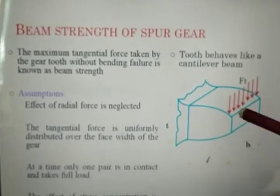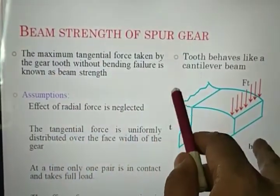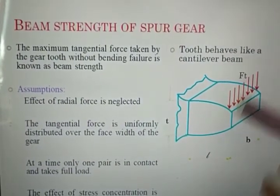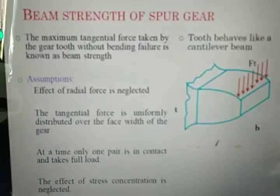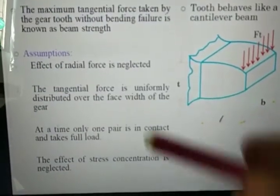And here we are going to design the beam strength equation, the maximum tangential force taken by the gear tooth without bending failure. So for that, Lewis considers some assumptions.